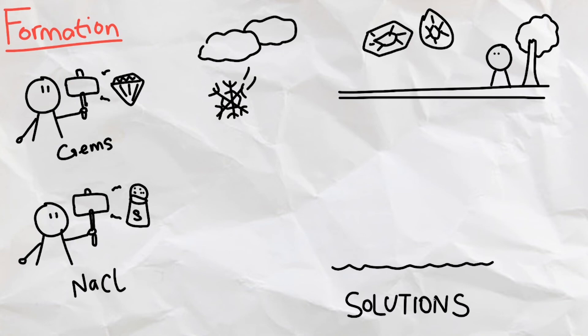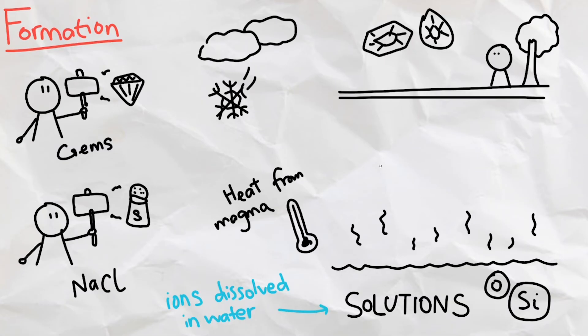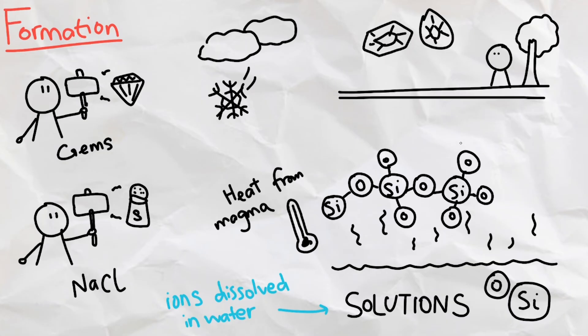Those crystals are formed from solutions, which are ions dissolved in water. For example, before quartz crystals are formed, they start out as a puddle of oxygen and silicon ions. As magma in earth heats the solution up, the water in the solution evaporates, leaving only the oxygen and silicon ions behind.